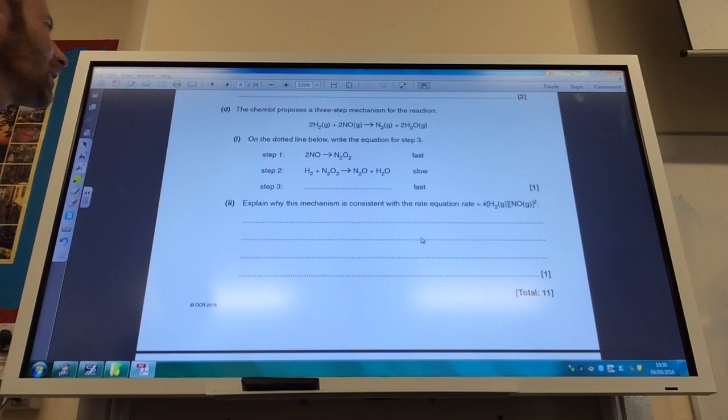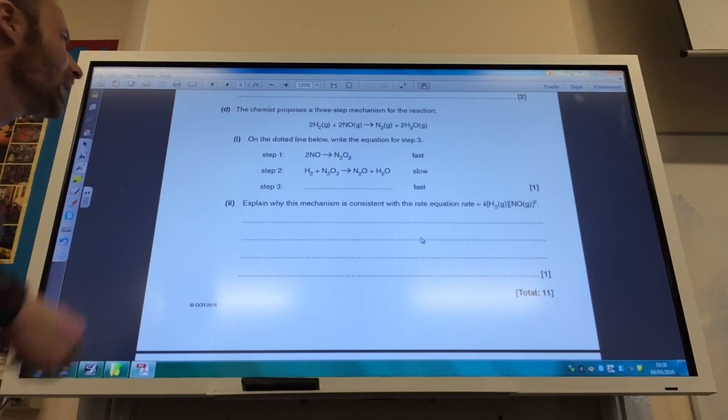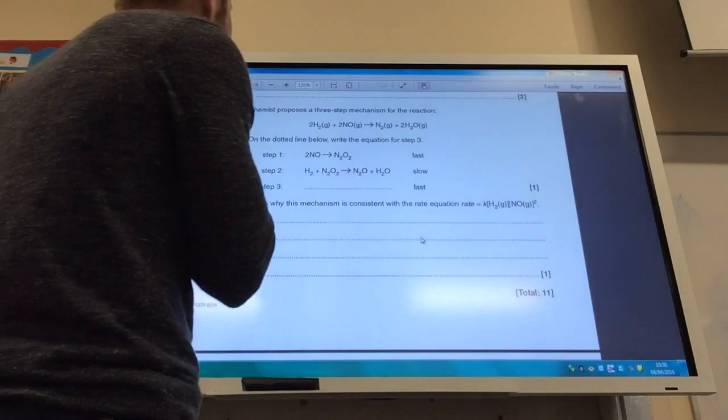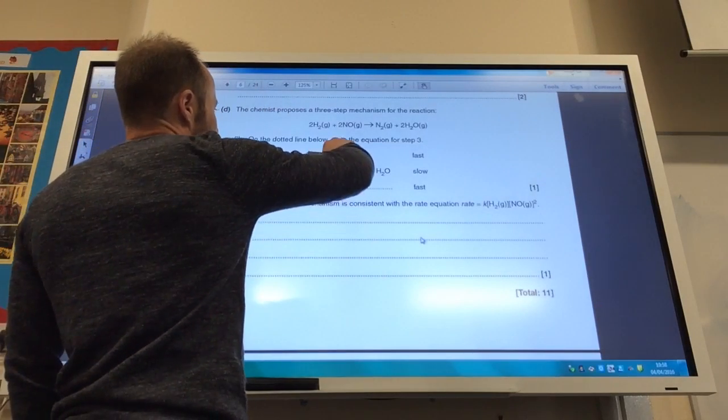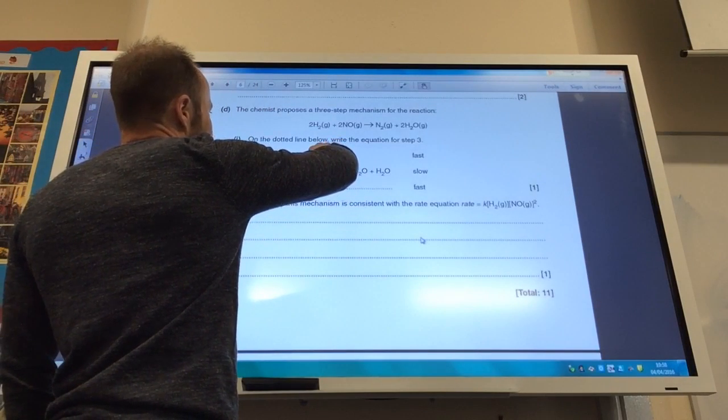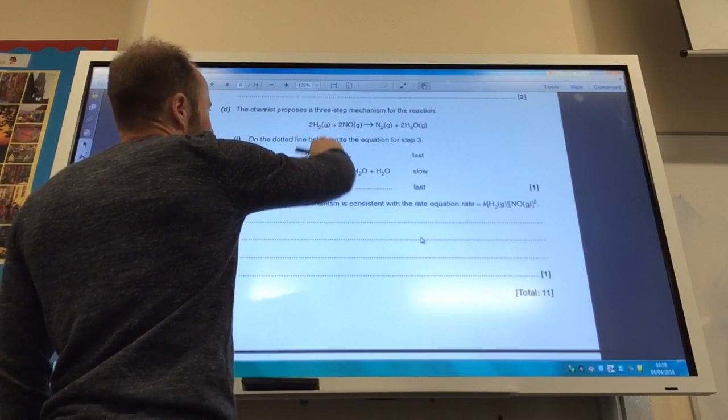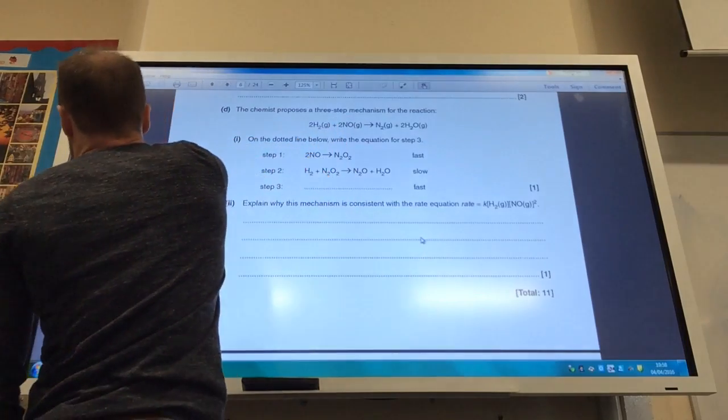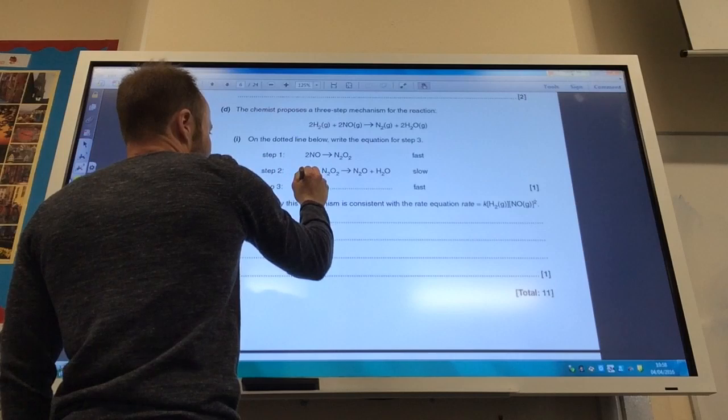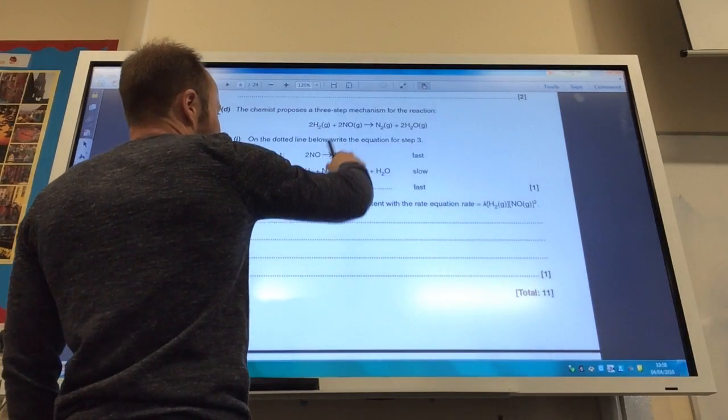Okay, so now we've got to put this all together and get a mechanism for this reaction. So we've got the overall equation up there, and we've got a proposed mechanism, and they want the equation for step three. So we've got to make sure we use everything up. So here I've got my two NOs, that's okay, but I've only used one H2 here.